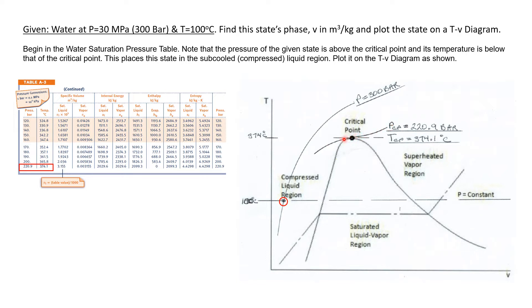That gives us a reference point for pressure and temperature. The top of the vapor dome is at 374 degrees C, and the pressure line through the critical point is 220.9 bar. Our state is at 300 bar, which is above 220.9 bar, so I'll draw a pressure line above the critical point — up to the right on the TV diagram.